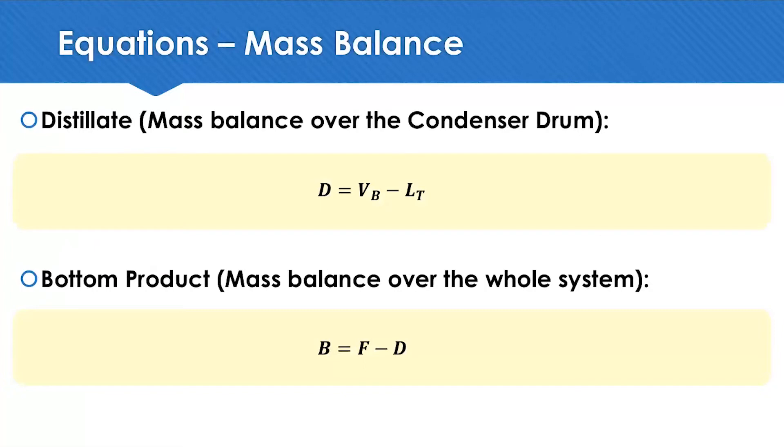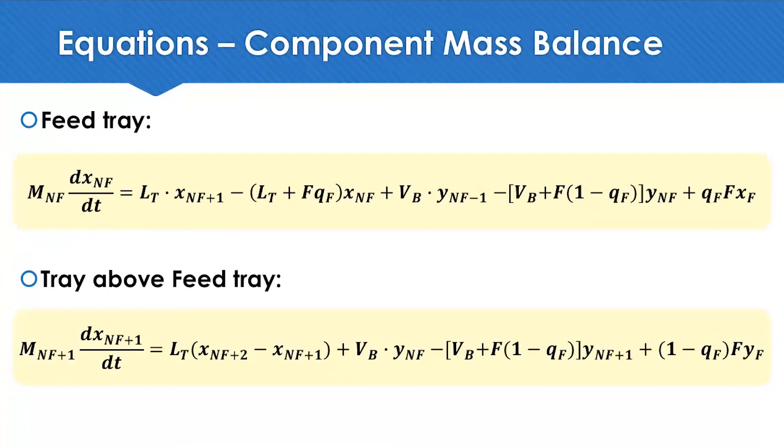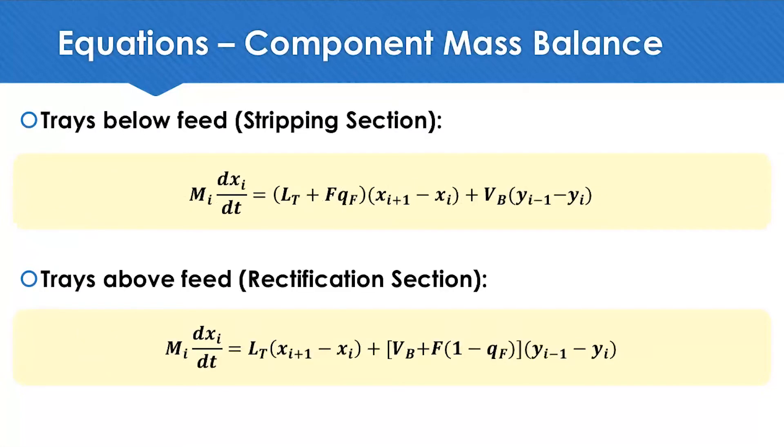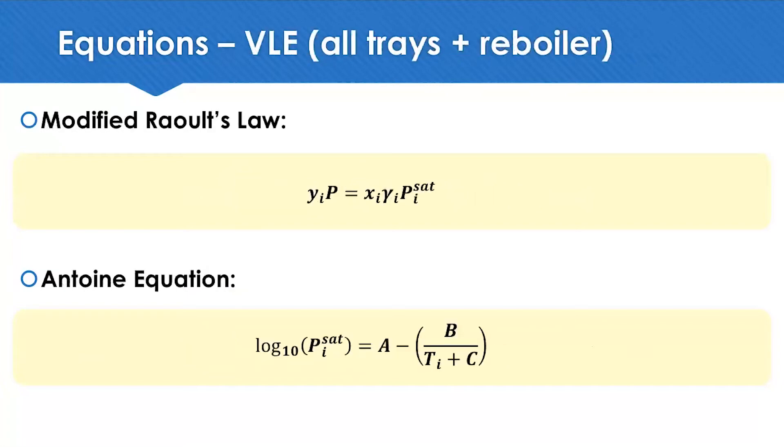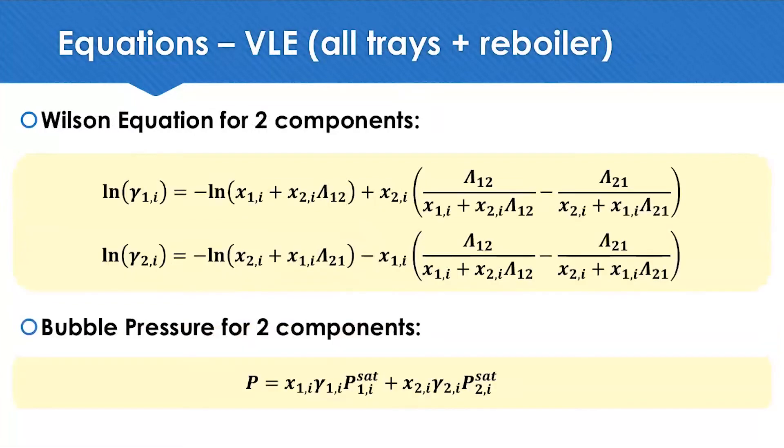Here we have the mass balance in the condenser drum and over the entire system. The component mass balance at the feed tray and at the tray above. The component mass balance on the stripping and rectification sections. The component mass balance on the reboiler and the condenser. The vapor-liquid equilibrium equations are calculated for all trays and for the reboiler. We have the modified Raoult's law, Antoine equation, Wilson equation for two components, and bubble pressure for two components.